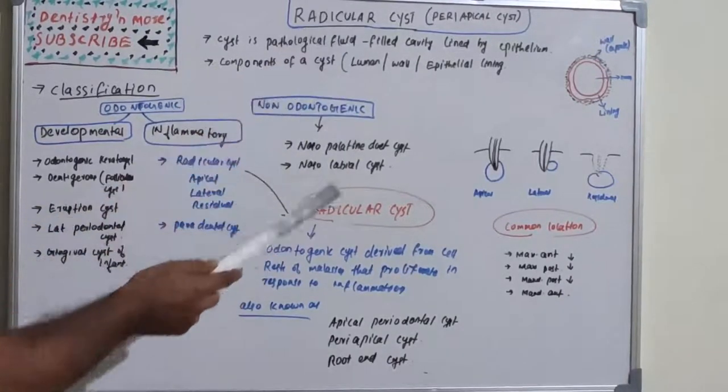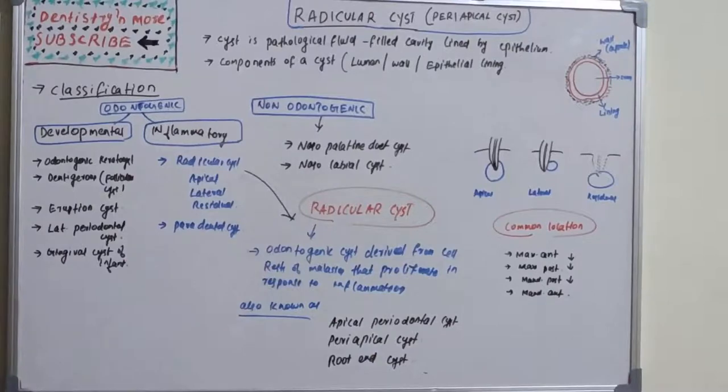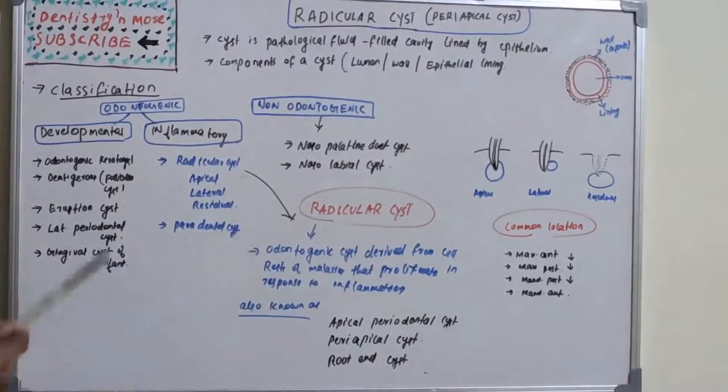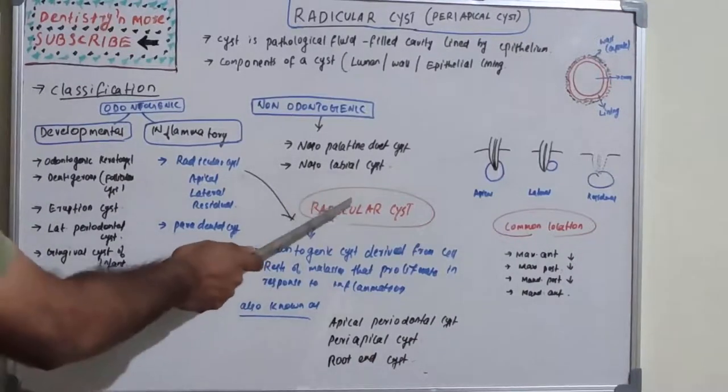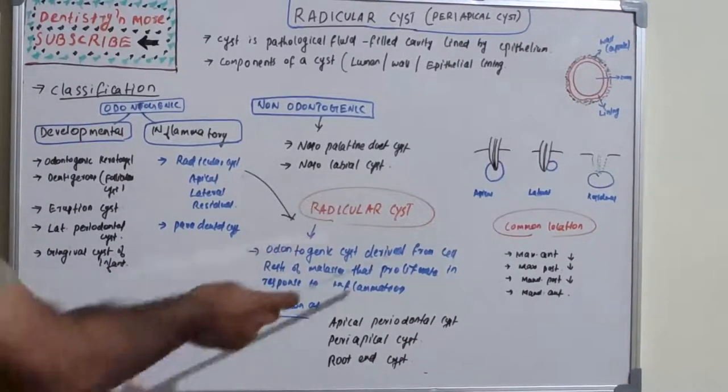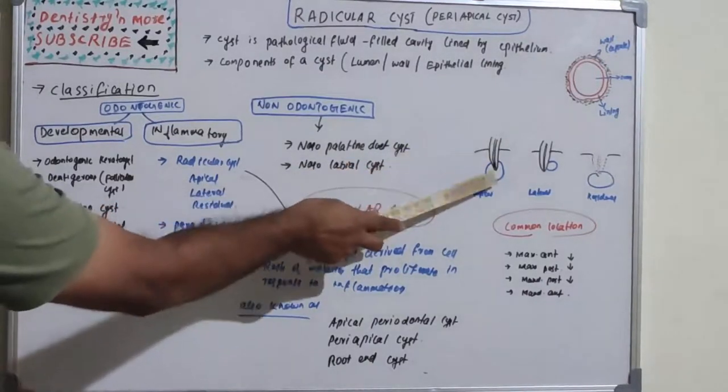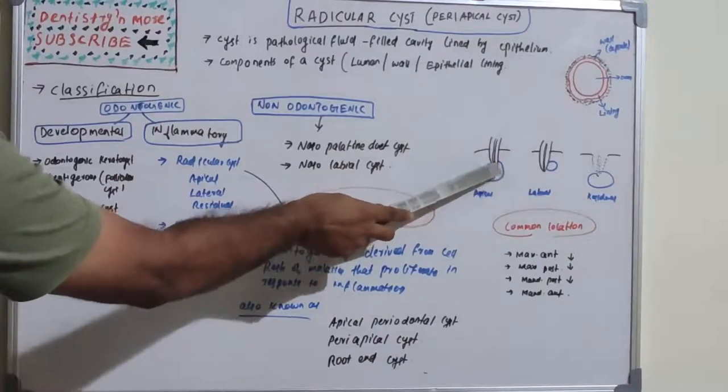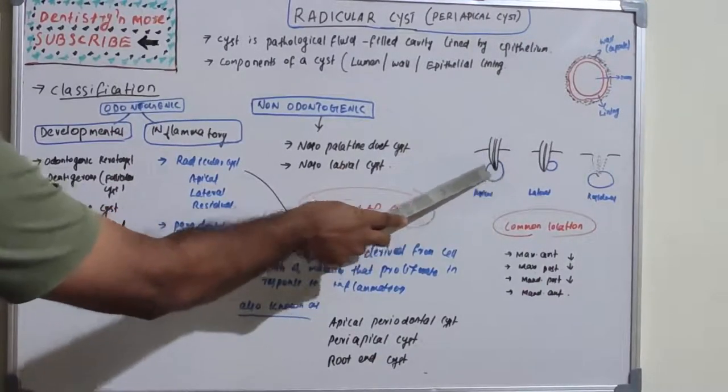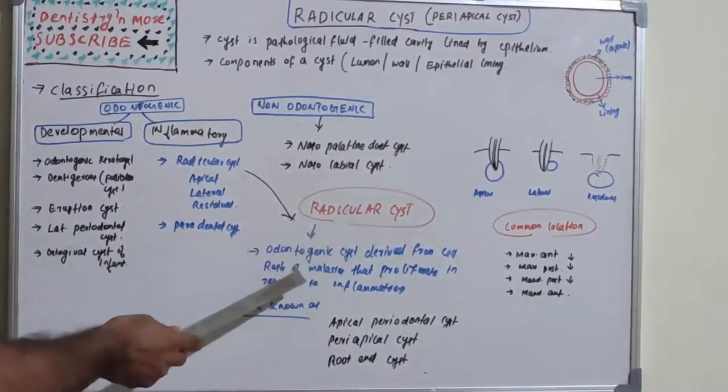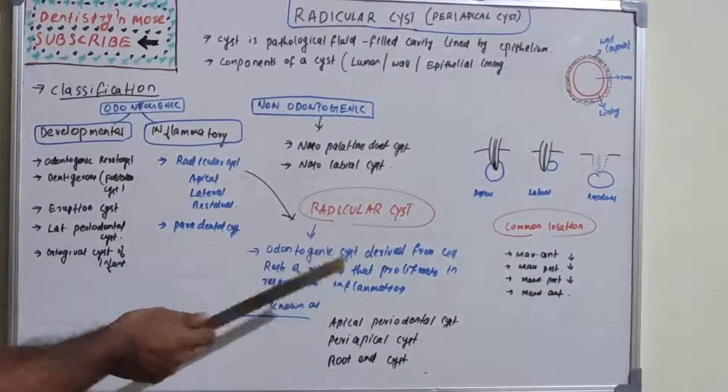Radicular cyst is an odontogenic cyst which is derived from cell rest of Malassez, which proliferates in response to inflammation. Radicular cyst is seen at the root tip. When caries occurs and is not treated, it goes to the tip of the root, causes inflammation, and becomes a cyst.